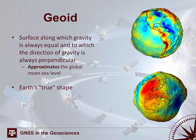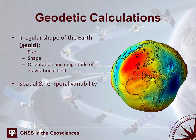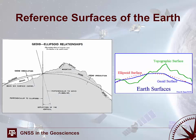It's important to note that the geoid may also be referred to as Earth's 'true shape.' While the geoid may be the best model of the Earth that we have, it's also highly irregular in size, shape, and the orientation and magnitude of the gravitational field — it is highly dynamic and changes across space and through time. There are many different reference surfaces that we could choose to apply to the Earth. The three surfaces that we'll focus on for the purpose of this course are the ellipsoid, geoid, and the true topographic surface.